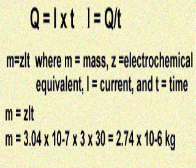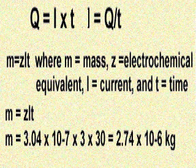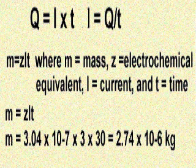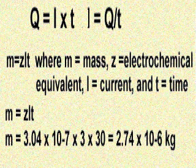In accordance with Faraday's experiment with the silver nitrate solution, a current of 1 amp flowing for a time of 1 second, equivalent to a charge of 1 coulomb, will deposit a mass of 1.118 times 10 to the minus 8th kilograms per centimeter. This is called the electrochemical equivalent, denoted by the letter Z. The total mass liberated from the anode is given by M equals Z times I times T, where M is the mass, Z is the electrochemical equivalent, I is the current, and T is the time.